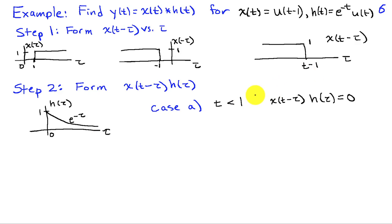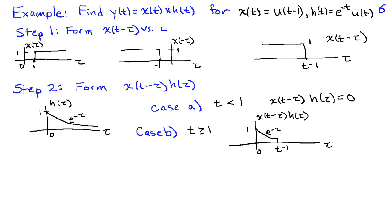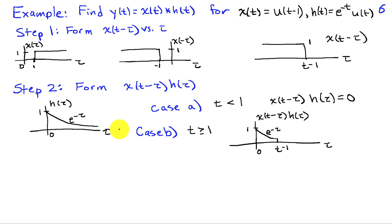Now we form the product of x(t − τ) and h(τ). h(τ) is 0 for τ less than 0 and e^(−τ) for τ greater than 0. When t is less than 1, the right edge of x(t − τ) is to the left of 0, and the product is exactly 0. Once t is greater than or equal to 1, there is overlap between the unity portion of this signal and the non-zero part of h(τ). So we can write the product as e^(−τ) between 0 and t − 1, and 0 elsewhere. This concludes step 2 — we only needed two cases to describe all possible values of t, treating t as a constant while τ is the independent variable.